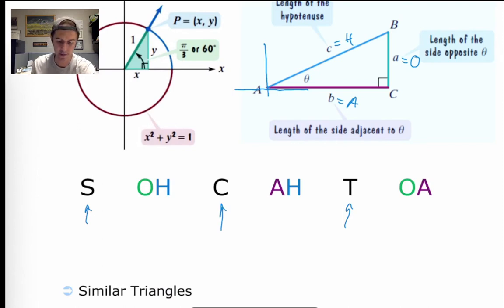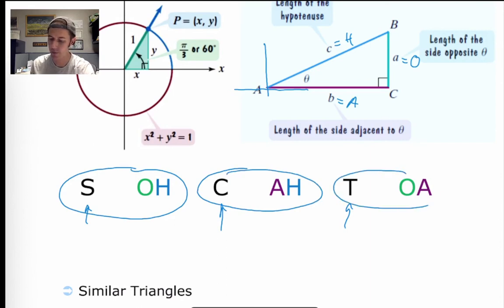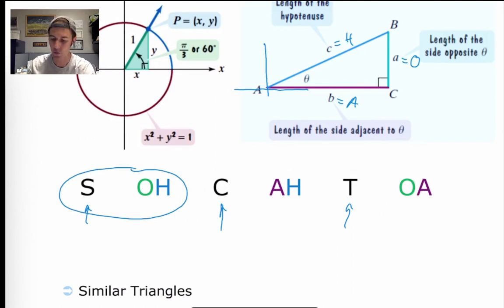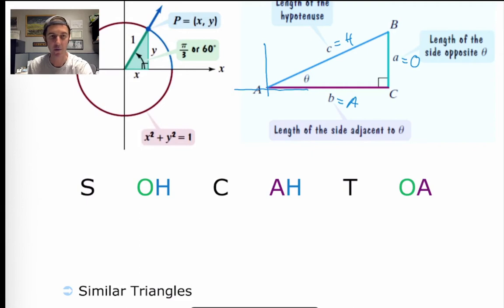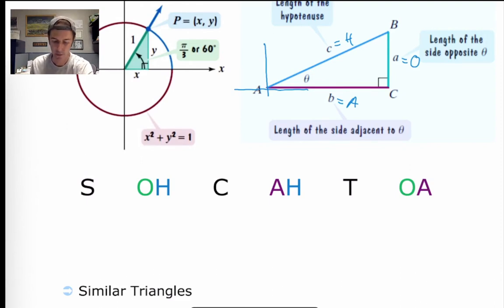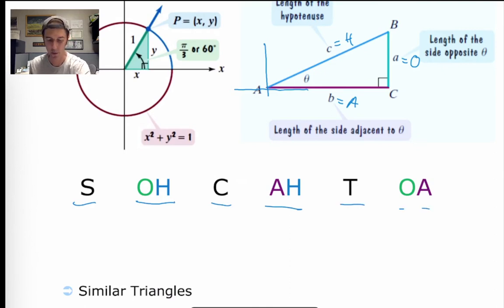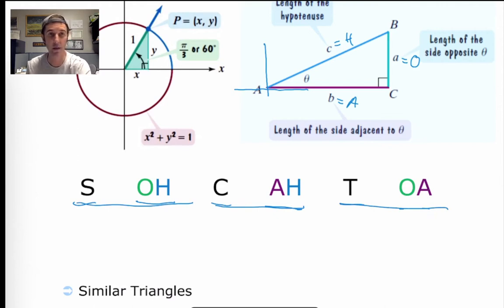Sine is equal to opposite over hypotenuse, cosine is equal to adjacent over hypotenuse, and tangent is equal to opposite over adjacent. There's a mnemonic many people use to remember those relationships. If you string all these letters together it would look like SOHCAHTOA — SOH, CAH, TOA — and that's one way people remember how to build those different fractions.